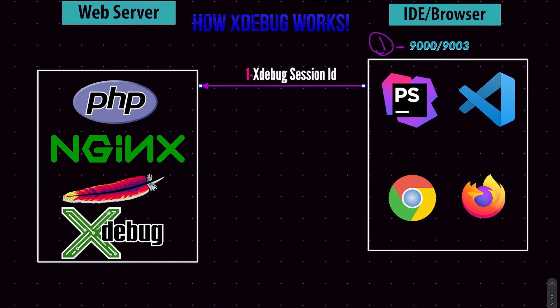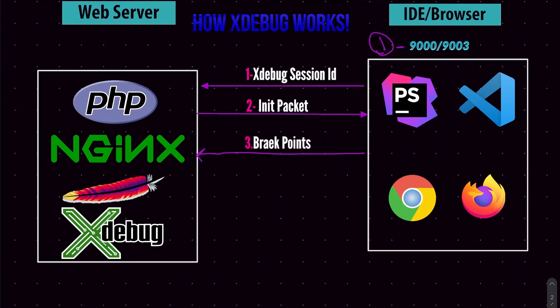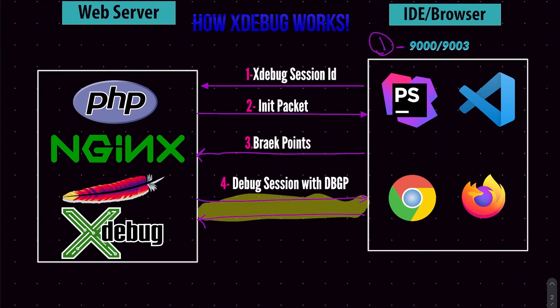After that, the web server starts to call back your IDE on port 9000 or 9003 and sends the init packet. This init packet starts communication via the DBGp protocol. The IDE sends the request to the web server — for example, a request to the login route — then Xdebug sends a communication start to port 9000 or 9003, which the IDE is listening on. The IDE then connects back with Xdebug and sends information about the breakpoints. The web server and IDE start to communicate via DBGp protocol, and the debugging process begins, with breakpoints sending information about the debugging process.